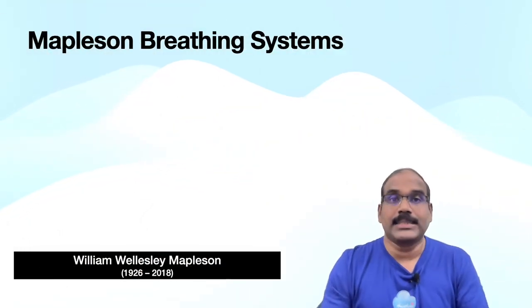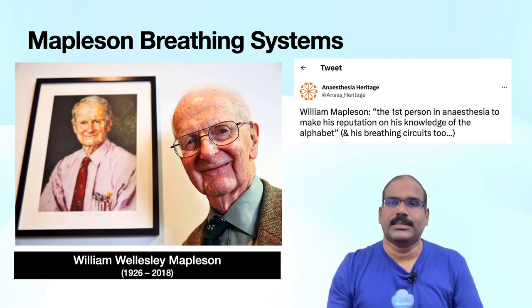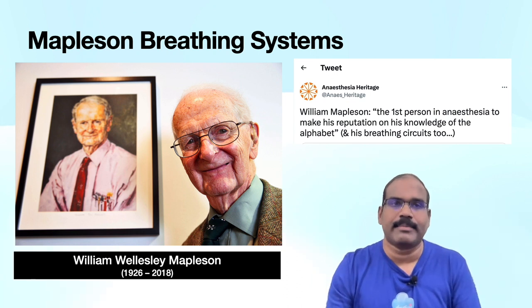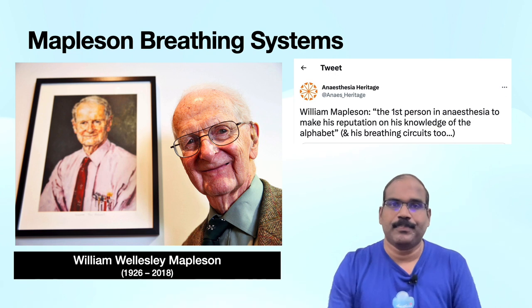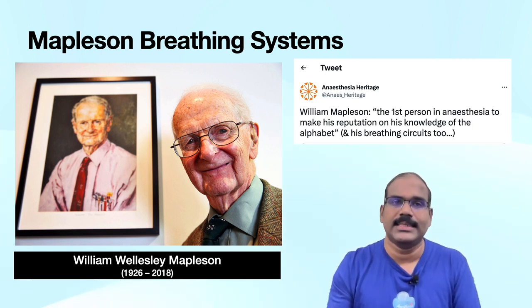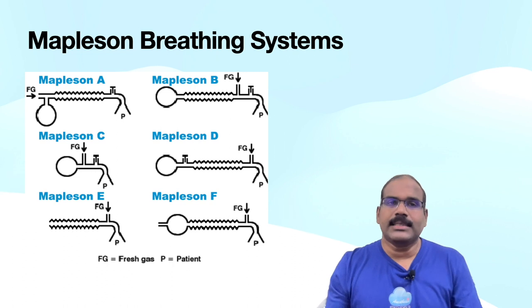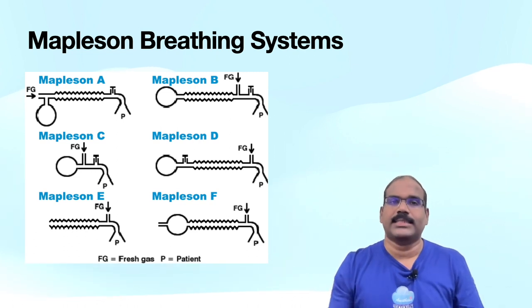Breathing systems without carbon dioxide absorption with bidirectional flow brings us to the classic Mapleson breathing systems. Mapleson performed a theoretical analysis of the fresh gas requirements of semi-closed systems available at that time. It is proper to refer to these as Mapleson systems, as he gave them a nomenclature of A, B, C, D, and E for easy identification as per their construction. Mapleson analyzed these bidirectional flow systems using mathematical calculations.